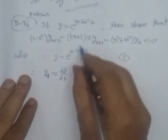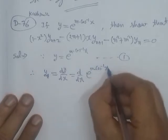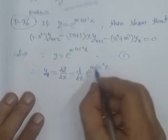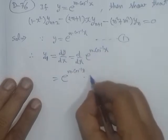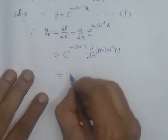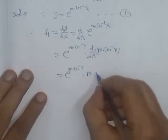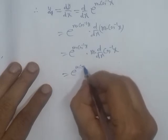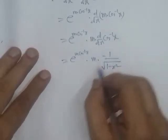To find y₁, we differentiate y = e^(m·cos⁻¹x). This gives e^(m·cos⁻¹x) multiplied by m times the differentiation of cos⁻¹x. We know that the differentiation of cos⁻¹x is minus 1 over square root of (1 - x²). So y₁ equals e^(m·cos⁻¹x) times m times (−1/√(1−x²)).